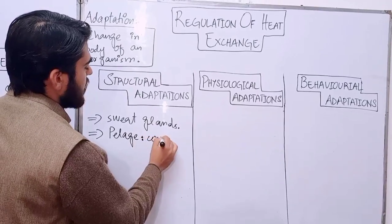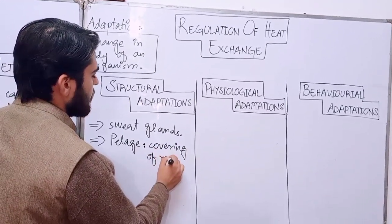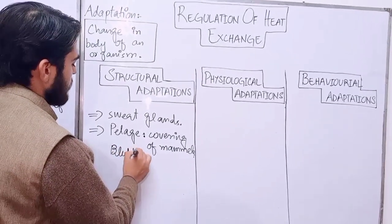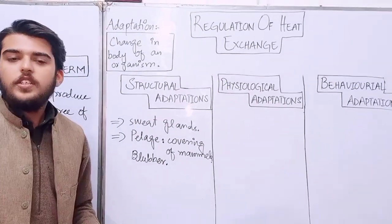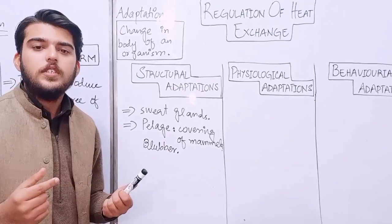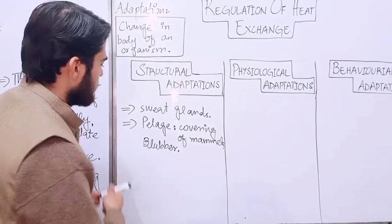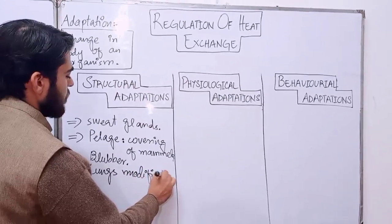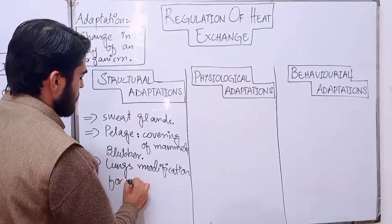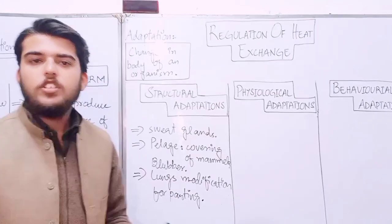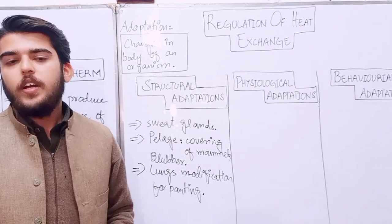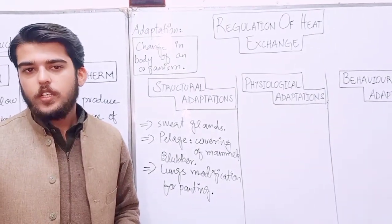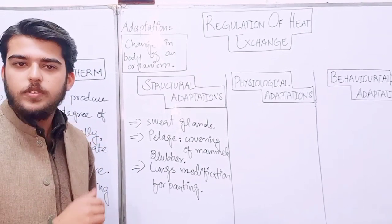Peelage is the covering of mammals. Another structural adaptation is blubber. Panting is also a structural adaptation — for example, dogs perspire through their tongue, which causes an evaporative cooling effect. Dogs put their tongue out and due to this, evaporative cooling occurs, producing a cooling effect. This is called panting.